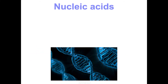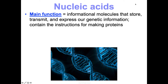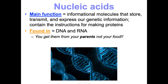Last but definitely not least are the nucleic acids — we'll spend about two complete units on them. Their main function is informational: they store, transmit, and express our genetic information. They have the instructions for making proteins that run your body, so essentially the instructions for making you who you are. They're found in DNA and RNA — deoxyribonucleic acid and ribonucleic acid. Fascinatingly, we don't get our DNA from food — we get it from our parents: 50% from your biological father's sperm and 50% from your biological mother's egg.